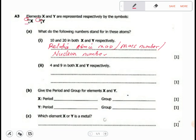4 and 9. What do they represent? They represent the atomic number. This is the atomic number, or we can call it the proton number.